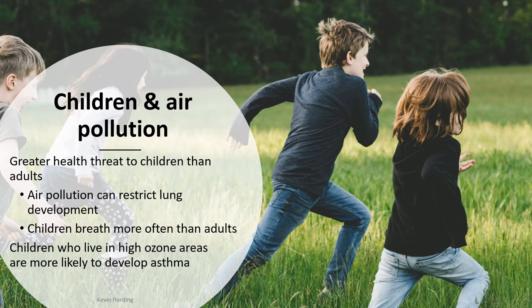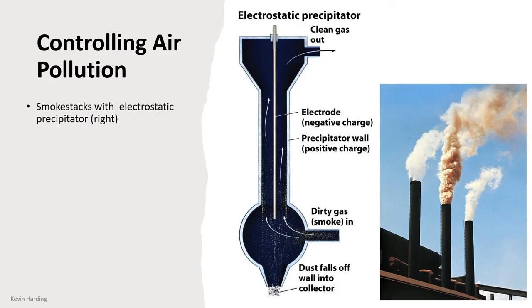Children are more susceptible to air pollution because their bodies are still developing and their lungs are smaller. Air pollution in a child's lungs can actually restrict lung development. Children are also more active than adults, breathing faster with a higher respiratory rate, so they get more pollution into their lungs and bloodstreams. High ozone areas also increase the likelihood of children developing asthma.